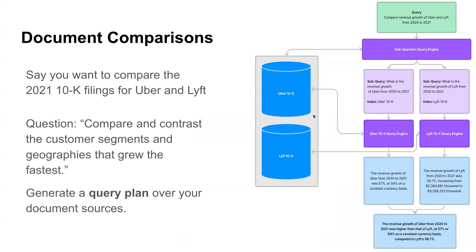The Sub Question Query Engine creates a query plan for the given query. For 'Compare revenue growth of Uber and Lyft from 2021 to 2022,' it generates two separate sub-queries: 'What is the revenue growth of Uber from 2021?' and 'What is the revenue growth of Lyft from 2020 to 2021?' It uses specific query engines to get answers, then consolidates the final answer. This works for complex compare-and-contrast queries across different documents.